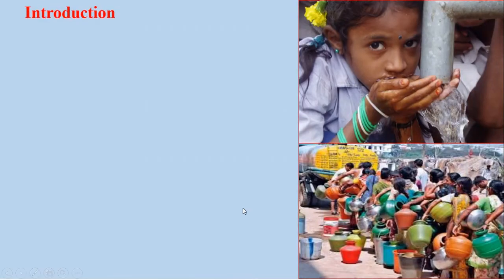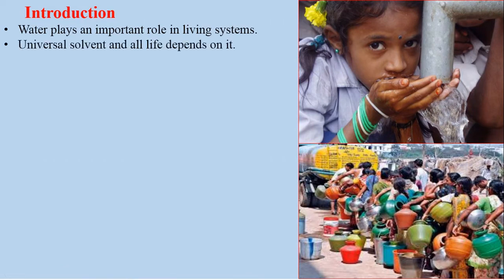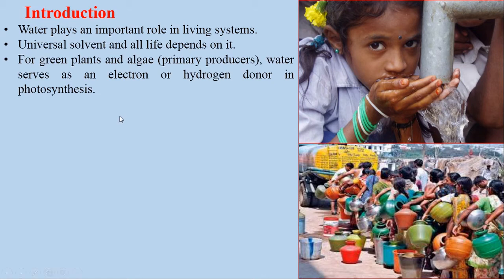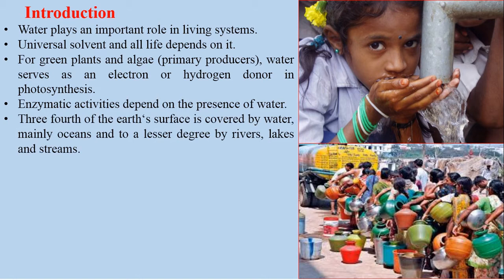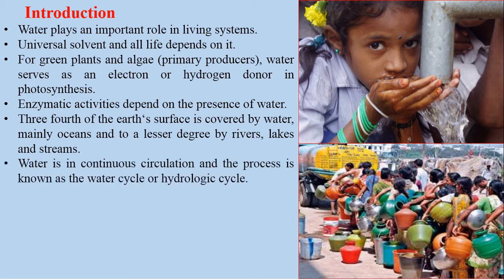All of you know that water plays an important role in the living system. It is a universal solvent and all life depends on it. For green plants and algae, water serves as an electron or hydrogen donor in photosynthesis. All life-supporting enzymatic activities depend on the presence of water. Nearly three-fourths of the earth's surface is covered by water, mainly in oceans and to a lesser degree by rivers, lakes, and streams. This water is in continuous circulation, and the process is known as the water cycle or hydrological cycle.